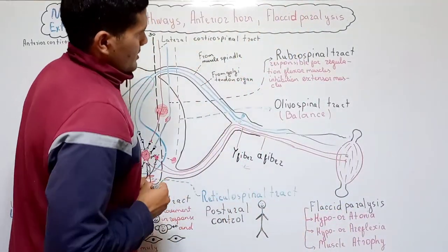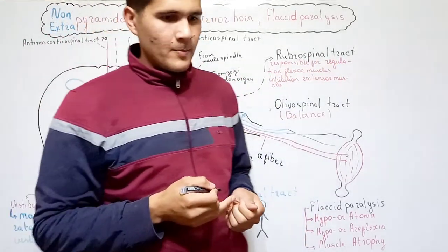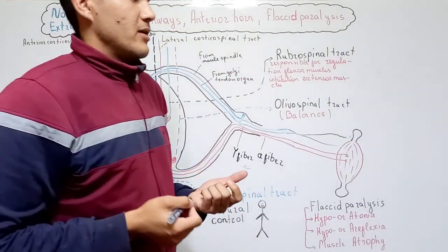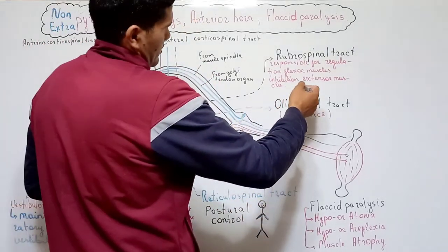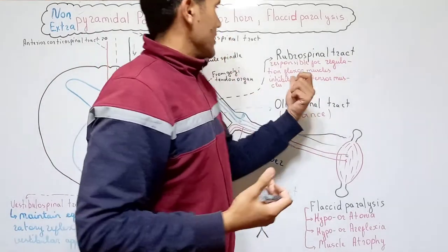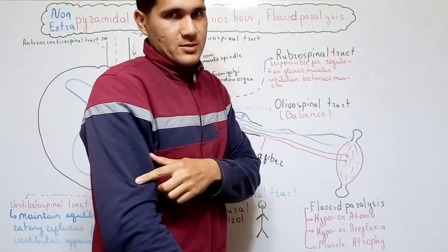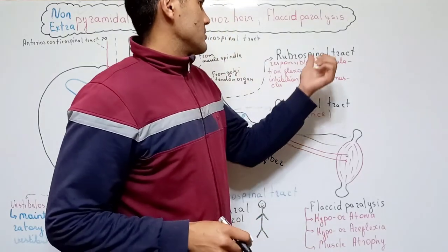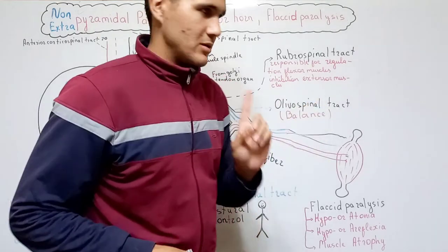The next tract is the rubrospinal tract. In the brainstem is located the nucleus ruber, and this nucleus plays an important role in motor function of the body. One of the main functions of the rubrospinal tract is stimulating our flexor muscles and inhibiting our extensor muscles. In our next lessons we will talk about lesions related to the rubrospinal tract, so please try to remember this information.